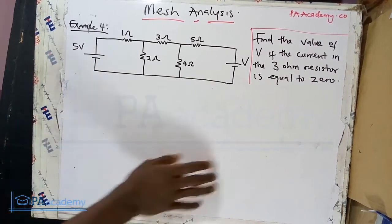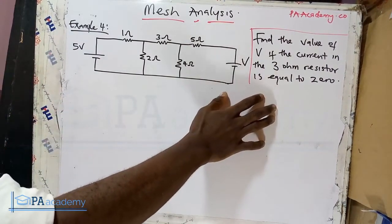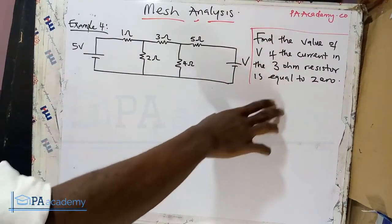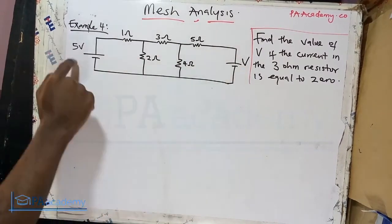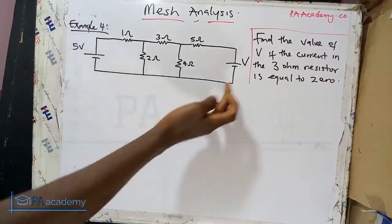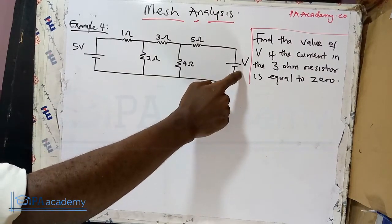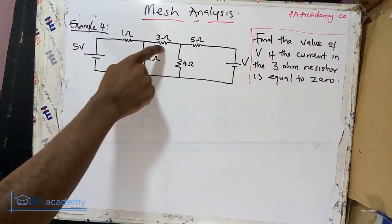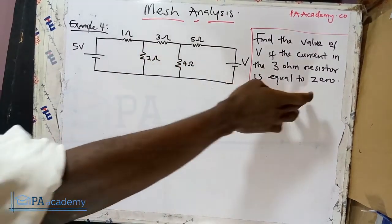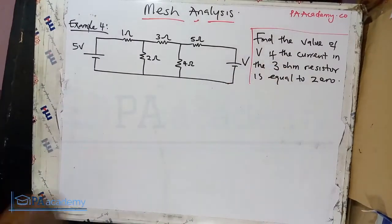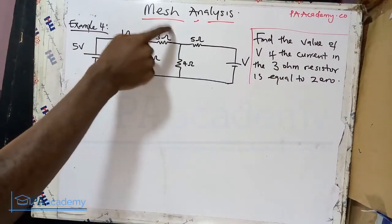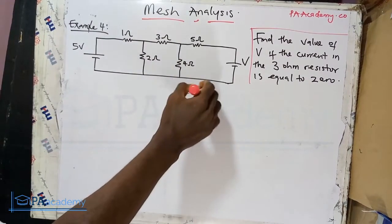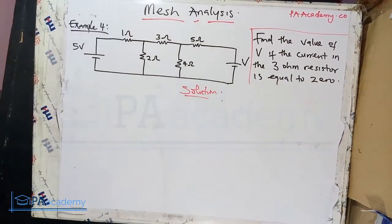This is example four. The question says: find the value of V if the current in the three-ohm resistor is equal to zero. We have two voltage sources — five volts and another unknown voltage source V, which is what we are asked to find. The current through the three-ohm resistor is given as zero. We will solve this using mesh analysis.